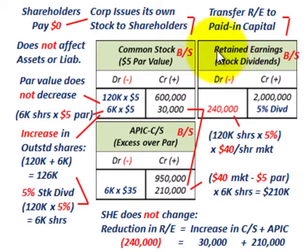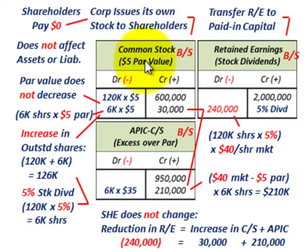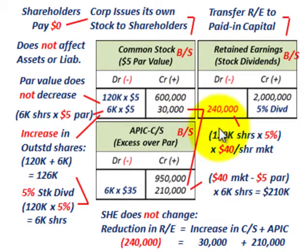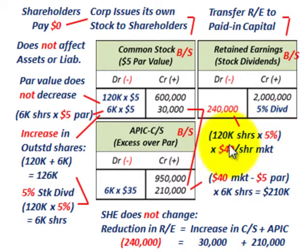Let's look at our accounts. Starting with retained earnings — this is where we're going to capitalize it, transferring from retained earnings into the paid-in capital of common stock. We had $2 million in retained earnings, and it's going to be reduced by $240,000. The key calculation: 120,000 shares outstanding times the 5% dividend rate times the $40 market price per share equals $240,000.